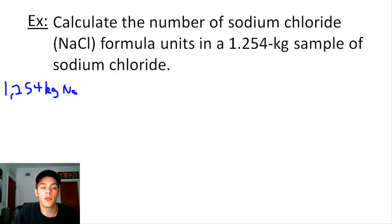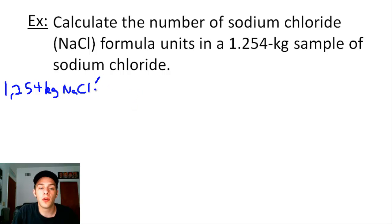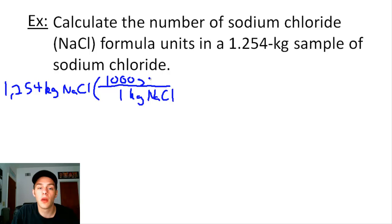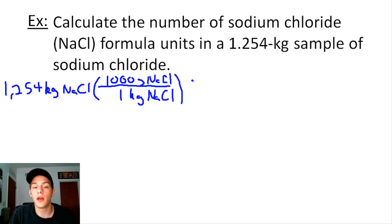Since molar mass is given in grams per mole, we need to convert kilograms to grams. The prefix kilo corresponds to 10³, so 1.254 kilograms of NaCl equals 1,254 grams of NaCl. Now that we have grams of NaCl, we can use the molar mass of NaCl (in grams per mole), placing grams of NaCl in the denominator.